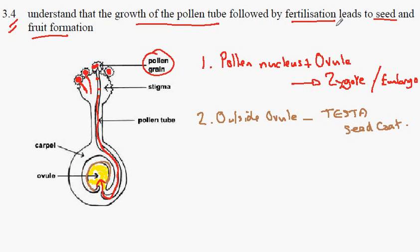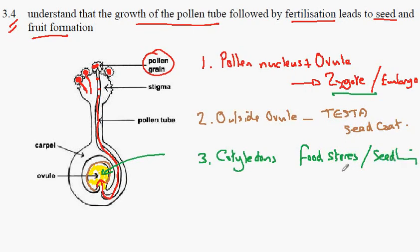Now inside, in addition to the zygote we also get the formation number 3 of the cotyledons. And these are our food stores for the seedling that will support the plant until it develops its first sets of leaves.